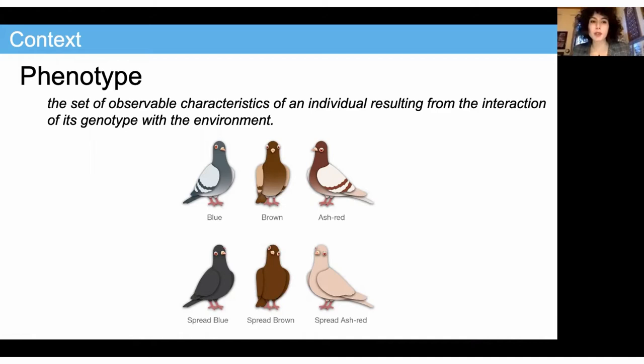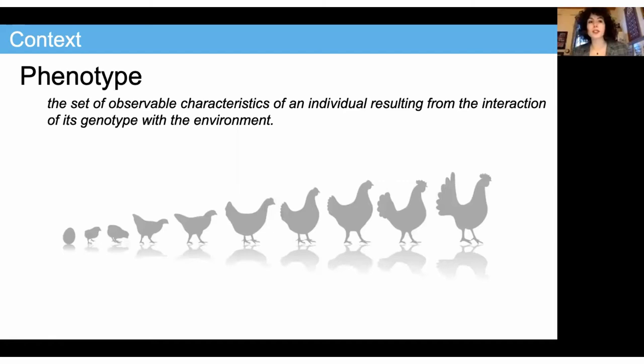What is a phenotype? A phenotype can be defined as the set of observable characteristics of an individual resulting from the interaction of its genotype and the environment. It could be, for example, the eye color, the feather color, but also your size or the muscle proportion of your body. It may also concern more global characteristics like your body weight or your longevity, and it seems it could be impacted by your genes but also your environment. However, the physiological and molecular mechanisms that allow this variation of phenotype are poorly understood.